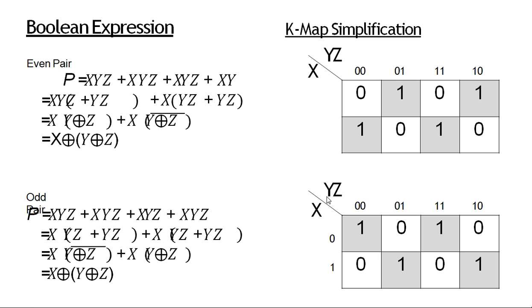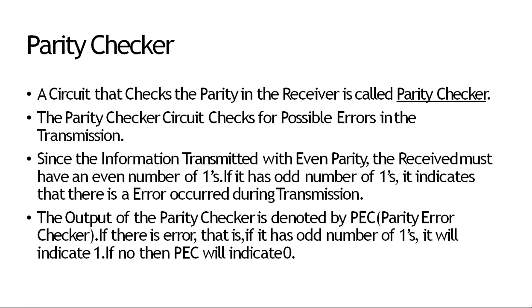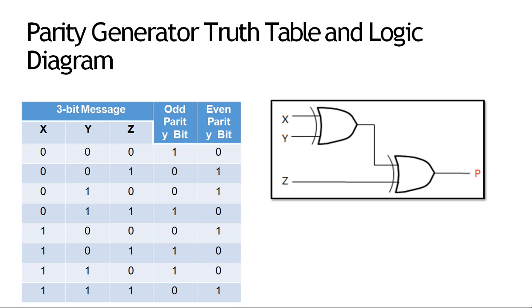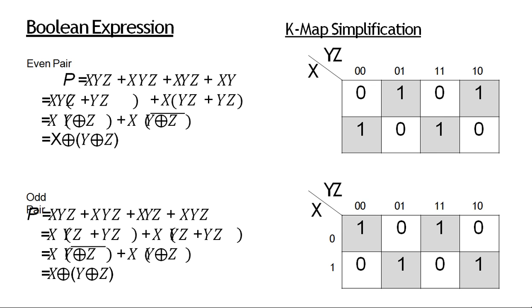इसी तरह odd parity का K-map बनाते हैं। इस K-map से क्या होगा कि x, y का XOR करें, फिर उसे एक और XOR में डाल दें — तो वो parity bit होती है। तो parity generator में x, y और z तीनों का XOR होगा।